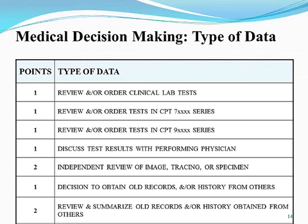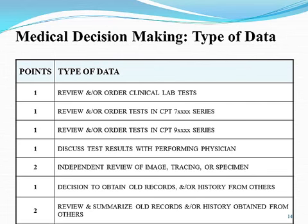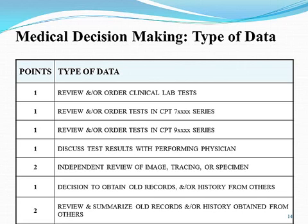The next type of data is the decision to obtain old records or history from others — simply making a statement that you did need to reach out, or are reaching out, to a certain family member or to obtain old records. The last item is review and summarize — the key is not only to review it but to summarize it. Summarize those old records and history obtained from others. We often see providers state they reviewed it, but they fail to then summarize. Provide some bullets of what was reviewed and your thoughts on that.